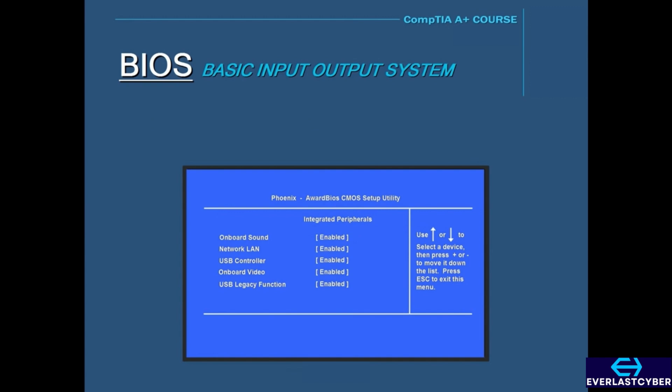Other things you can do in a BIOS are enable or disable certain devices. For example, if your motherboard has a built-in video, network, or sound card, you can disable these devices in the BIOS to save resources if you're not using them. But you only want to disable these if your motherboard already has the adapter cards installed that give you these capabilities.